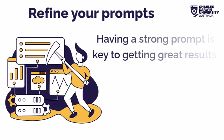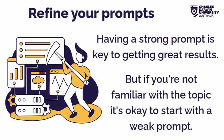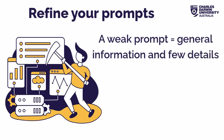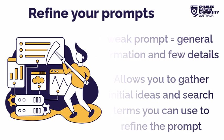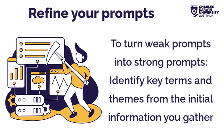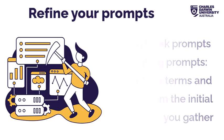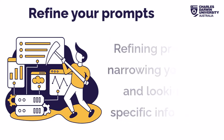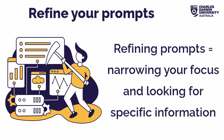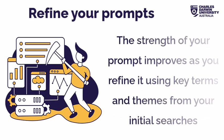Having a strong prompt is key to getting great results from Gen AI. However, if you're not familiar with the topic or need some ideas, it's okay to start with a weak prompt and work your way up. A weak prompt will give you general information and very few details, but it allows you to gather initial ideas and search terms to refine your prompt. To turn a weak prompt into a strong one, identify key terms and themes from the initial information. By adjusting your prompt and including these important elements, you can obtain more specific and targeted results. Gradually transforming a weak prompt into a strong one allows you to make the most of Gen AI and obtain better quality results.